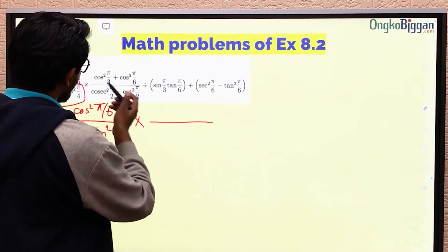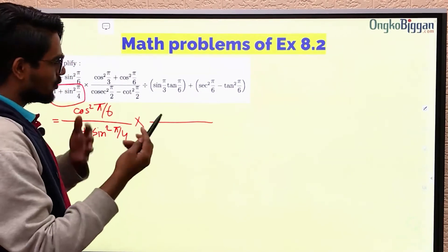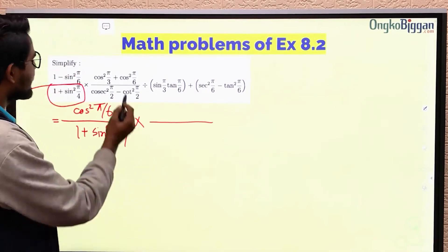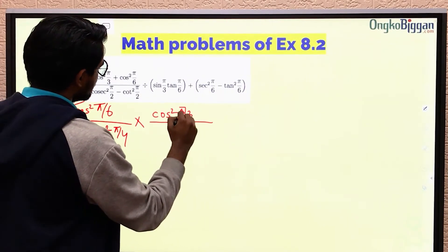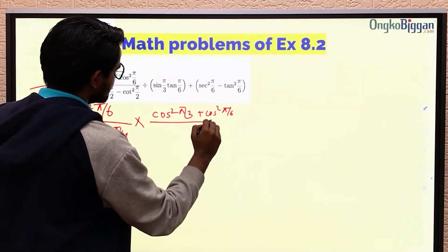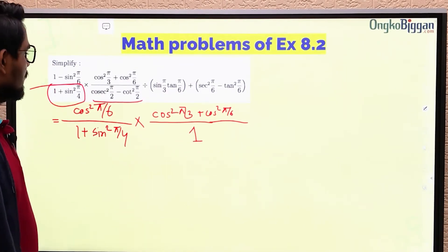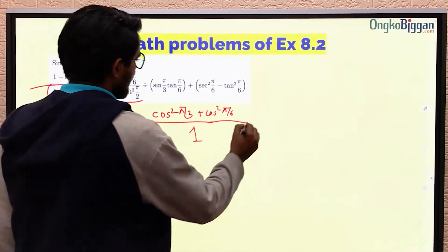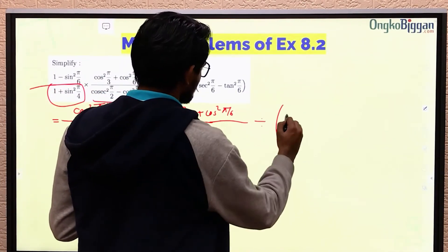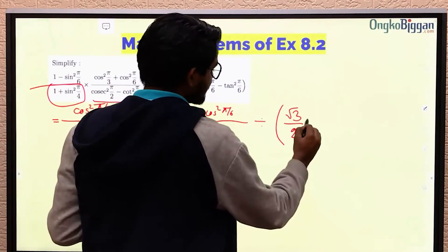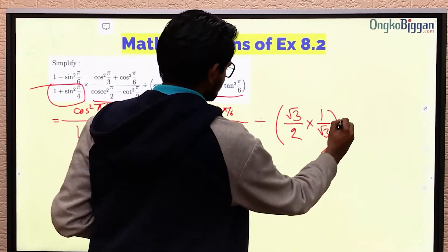I'm going to do it step by step for teaching purposes, but in an exam I would directly put the values. I'll keep them as cos² π/6. I can change the cos² π/2 minus cos² π/2 part into 1, as shown before. Then divided by sin π/3 times tan π/6 — sin π/3 equals √3/2 and tan π/6 equals 1/√3. This part will be 1 plus 1.